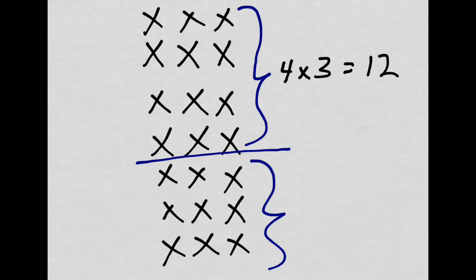And down here I have three groups of three, or three times three, and if I count again by three is three, six, nine, I see that that's nine.